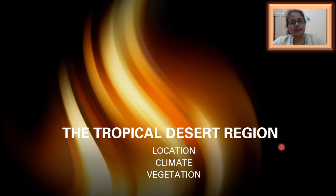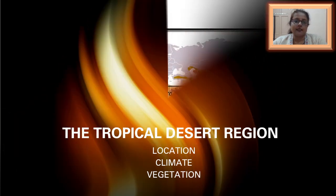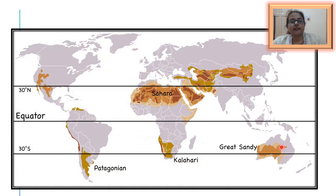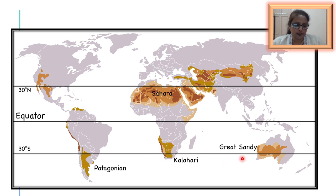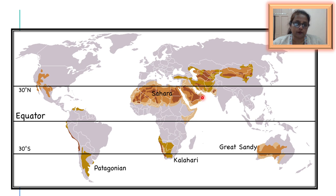As far as the tropical desert region is concerned, from the map we can see that it extends from approximately 15 degrees north to 30 degrees north in the northern hemisphere, and 15 degrees south to 30 degrees south in the southern hemisphere. As these deserts lay astride the Tropic of Cancer and the Tropic of Capricorn, they are known as tropical deserts. Astride means extending around.